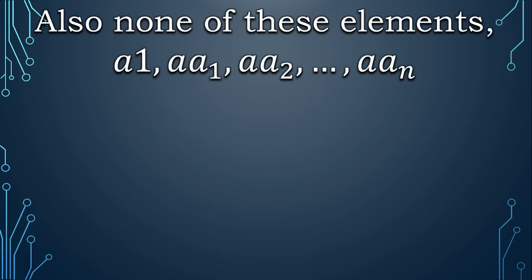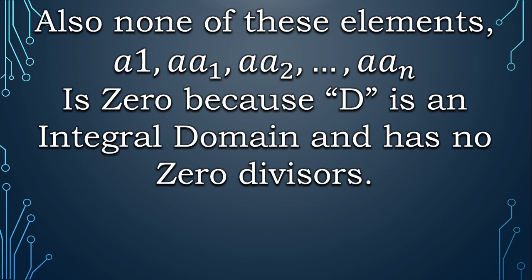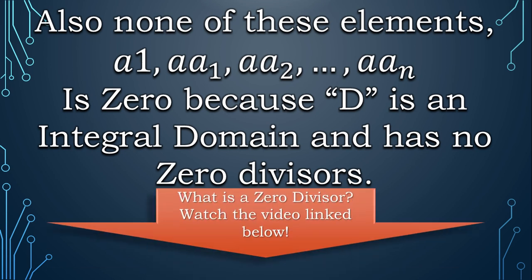Also, if you know the concept of zero divisors, we know that no pair of non-zero elements gives zero on multiplication in integral domains. So all these elements a·1, a·a₁, a·a₂, up to a·aₙ are actually non-zeros. If you don't know the concept of zero divisors, you know what to do.